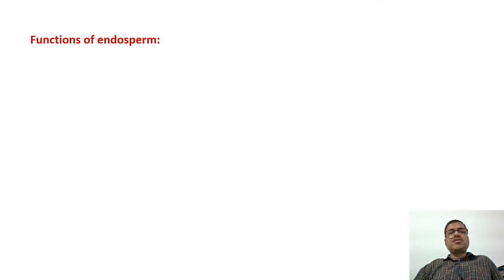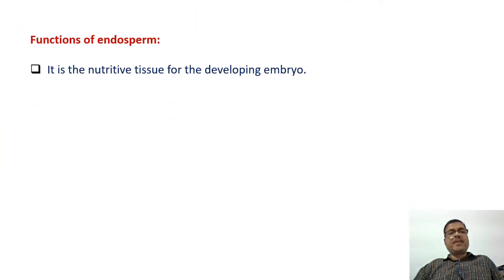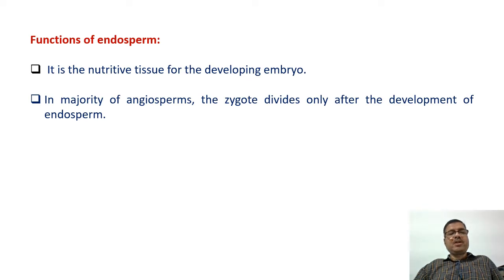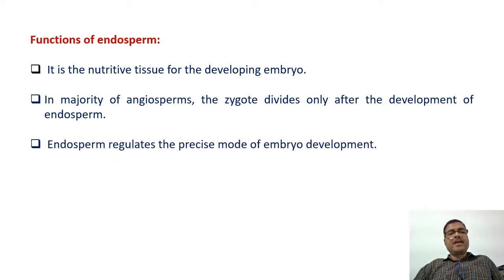Functions of endosperm: it is a nutritive tissue for the developing embryo. In the majority of cases, the zygote divides only after the development of endosperm. Endosperm also regulates the precise mode of embryo development.